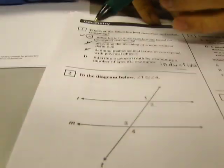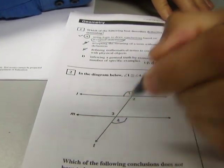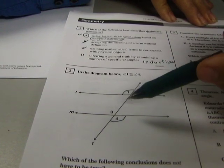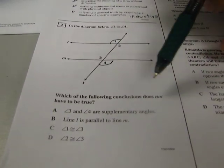Number two, in the diagram, angle one is congruent to angle four. Well, the first thing you should ever do is, if you have some given information, is to mark it immediately because it helps you solve the problem. Which of the following conclusions does not have to be true?